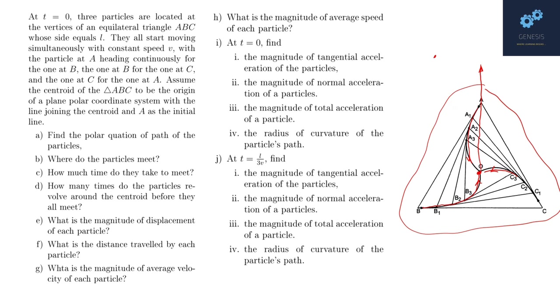That is, if this is the centroid, if a particle goes like this and completes one turn like this, then how many such turns will its path have? How many times will it revolve around the origin or the centroid before actually meeting with the other particles?